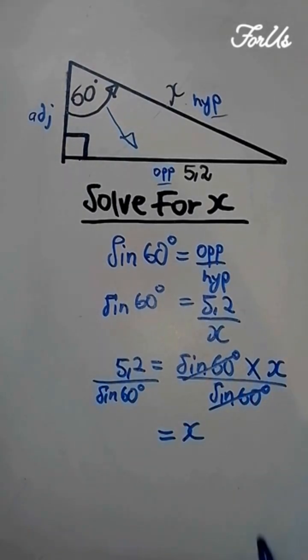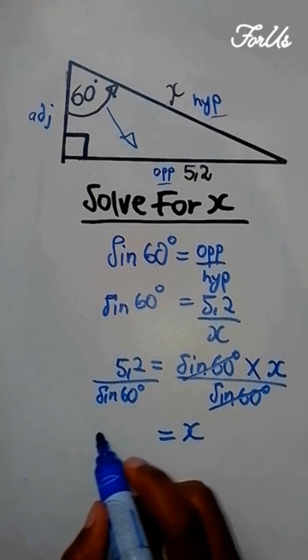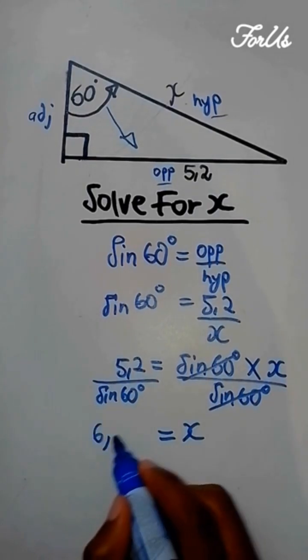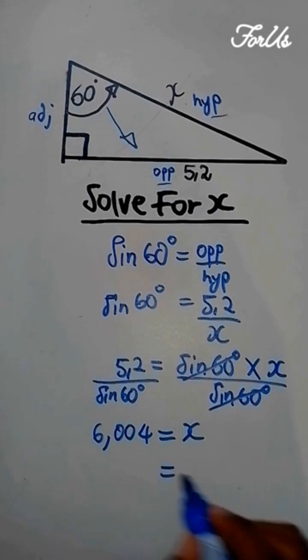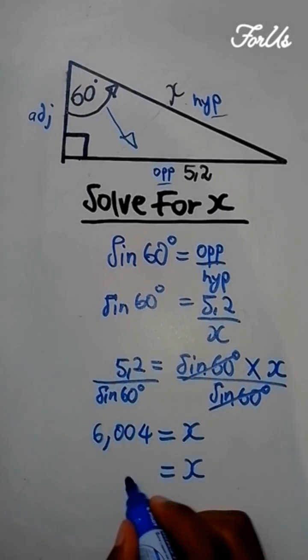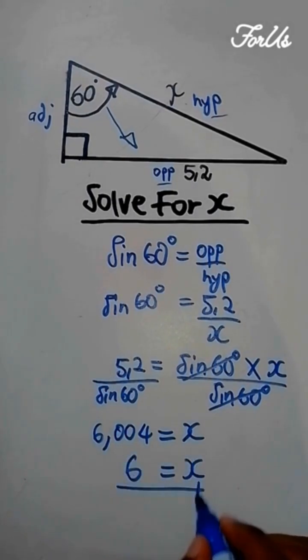Therefore x will be equal to 6.004, and to the nearest whole number is 6. That's the value of x.